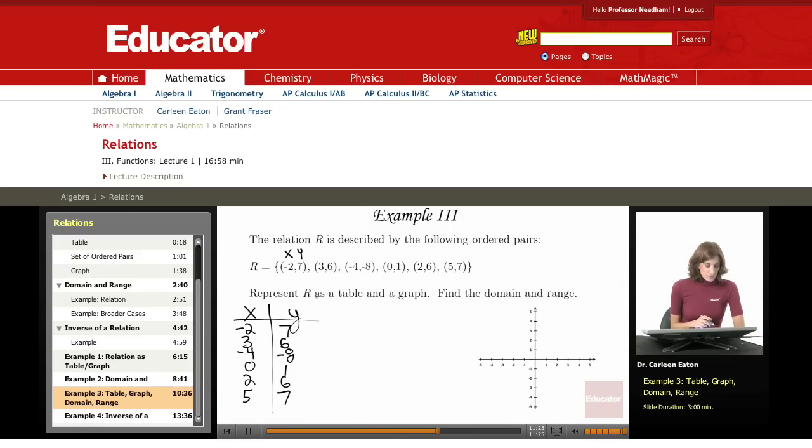So I've represented the relation as a table. Now, I'm asked to represent it as a graph. Again, I've been given a set of ordered pairs. So this is going to be just points on the coordinate plane, discrete points, 6 discrete points.